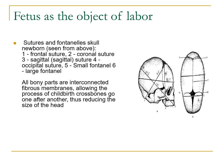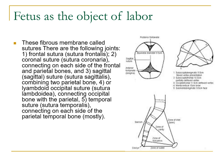Sutures and fontanels of the skull of the newborn seen from above: number one is your frontal suture, number two is your coronal suture, three is your sagittal suture, four is your occipital suture, five is your small fontanel, and six is your large fontanel. All bony parts are interconnected by fibrous membranes, allowing during childbirth the bones to overlap one after another, thus reducing the size of the head.